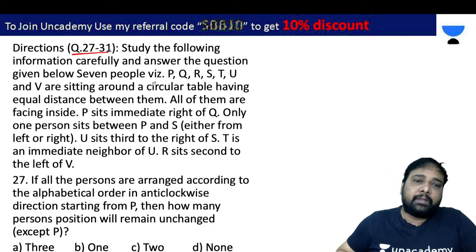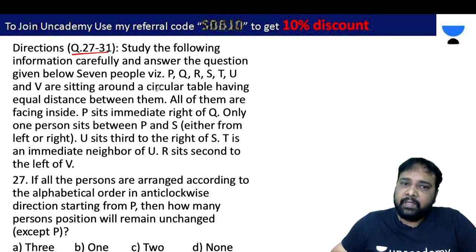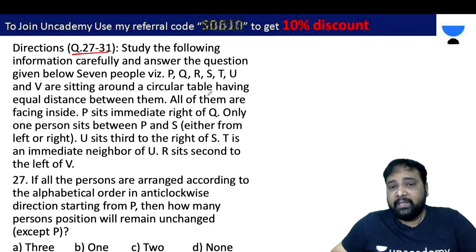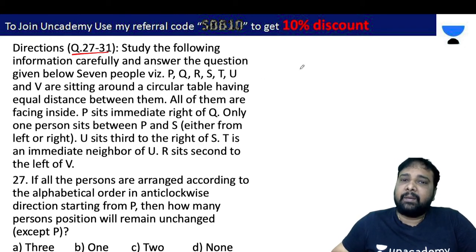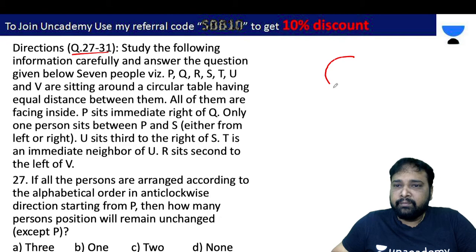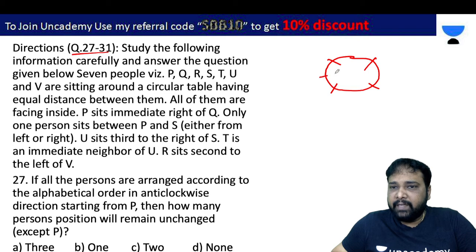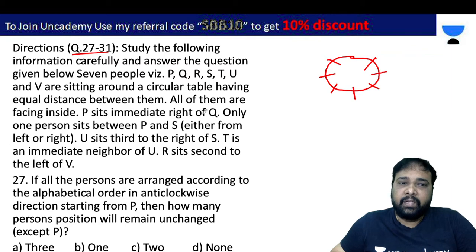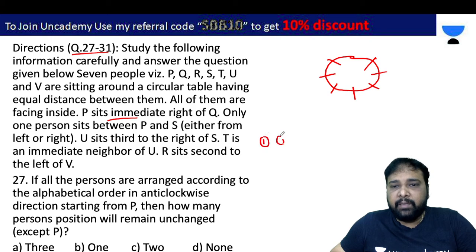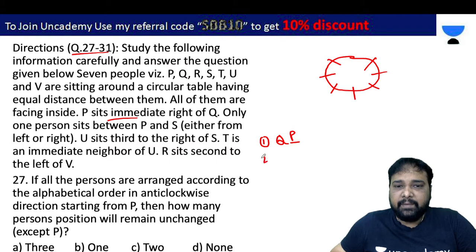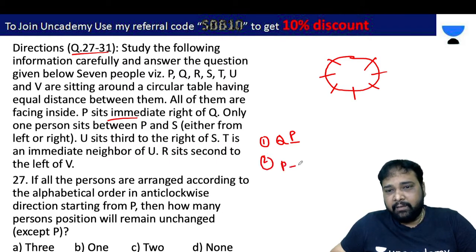Next: seven persons P, Q, R, S, T, U, B are sitting around a circular table with equal distance between them. All of them are facing inside. P sits immediately to the right of Q. Only one person sits between P and S, so S is to the right side with P.